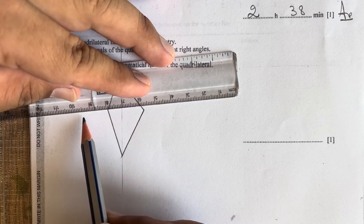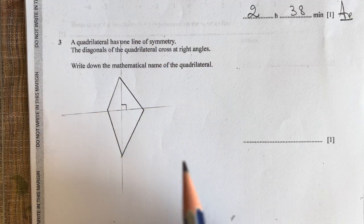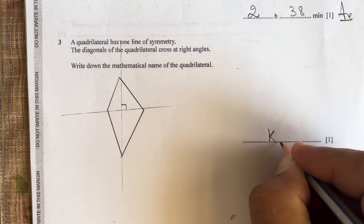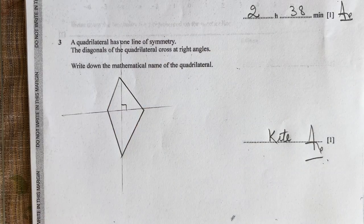The diagonals cross at right angles. So this is a kite. Kite will be the correct answer. Let us move to the next question.